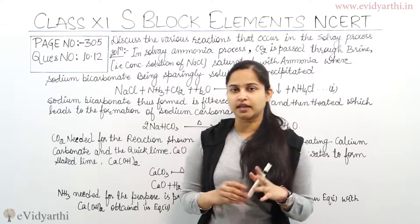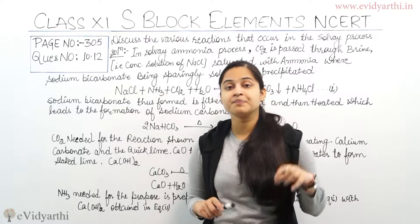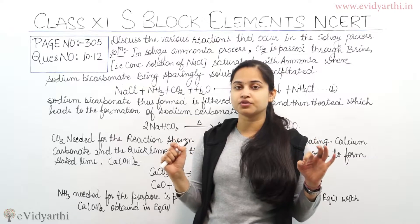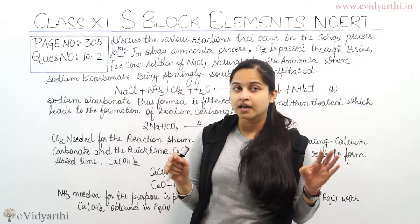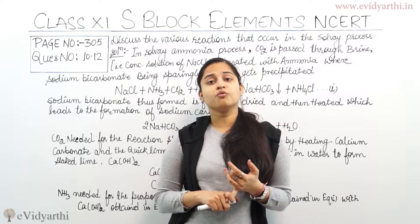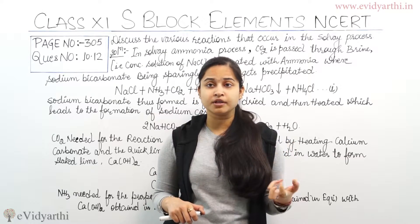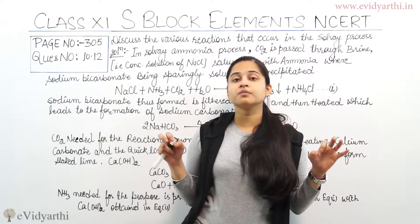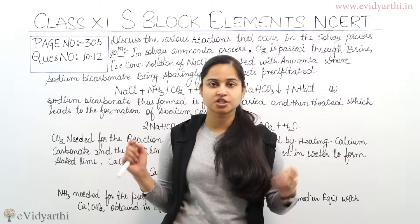In the Solvay ammonia process, carbon dioxide is passed through brine. Brine is a concentrated solution of sodium chloride, that means NaCl. CO2 is passed over brine along with a saturated ammonia solution. CO2 is passed through brine having a saturated ammonia solution, and we get sodium bicarbonate, which is sparingly soluble in water. Due to its sparingly soluble nature, we get NaHCO3 in precipitated form.